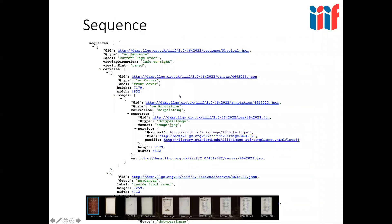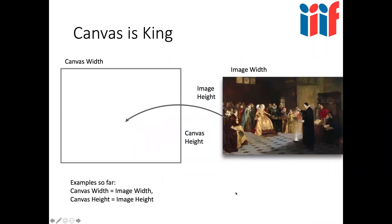Then we have the sequence — a sequence of images in a particular order — and inside the sequence is a canvas. The canvas can be thought of as the equivalent of a page of a book or a single painting. A canvas is a bit like a PowerPoint slide where you paint different things onto it. Canvas is king — it's one of the most important parts of the Presentation API. For this particular example we have a canvas with an image painted onto it so that the canvas is filled with the image, and the canvas width and height are the same as the image width and height.